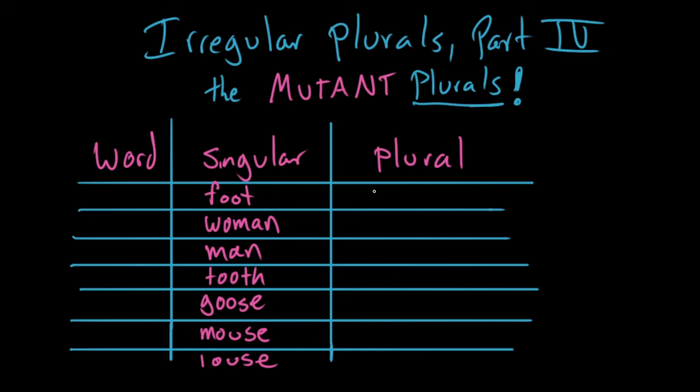Looks pretty straightforward, right? The thing about these words is that none of them take S as a plural. So the plural of foot is not foots, the plural of woman is not womans, the plural of tooth is not tooths. The reason these are called mutant plurals is because the vowel sound turns into a different sound. It turns into a different vowel sound.